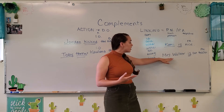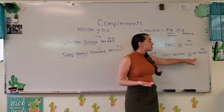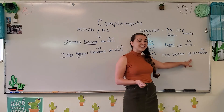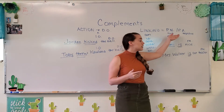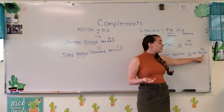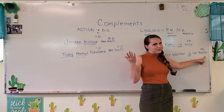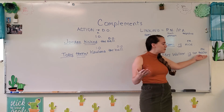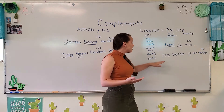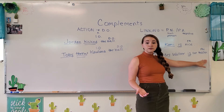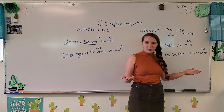A predicate nominative — here's an example: Mrs. Walker is our teacher. We see is again, so we know that's linking and we're probably going to have a predicate something. And teacher is a person — every teacher I know is a person. So that has to be a noun, so we call it a predicate nominative. And does Mrs. Walker equal teacher? Yeah. Does Cammie equal nice? Yeah, that makes sense.